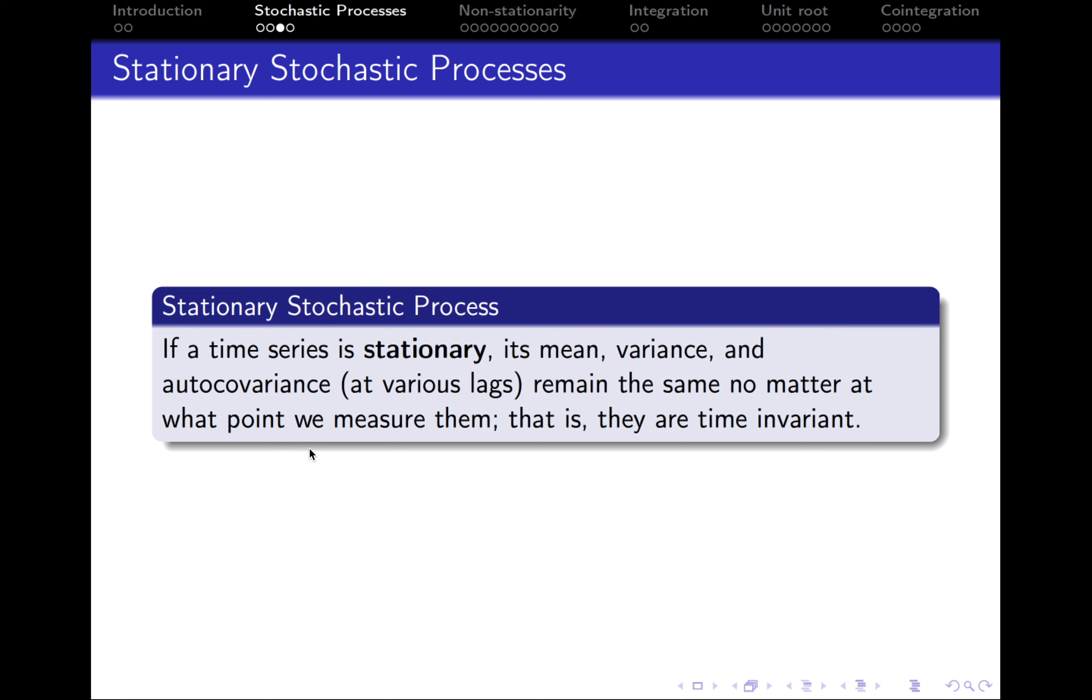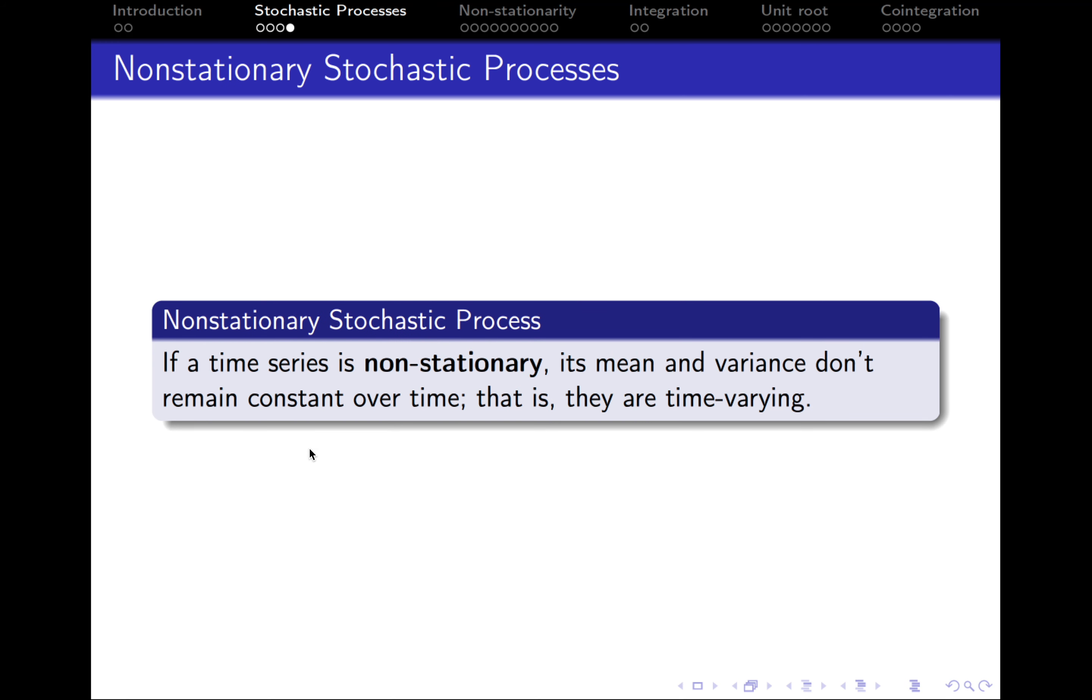However, as you will see in the future, this is not the case for a lot of variables. Actually, most of them tend to be non-stationary stochastic processes. If a time series is non-stationary, it means that its mean and variance do not remain constant over time—they are time varying.